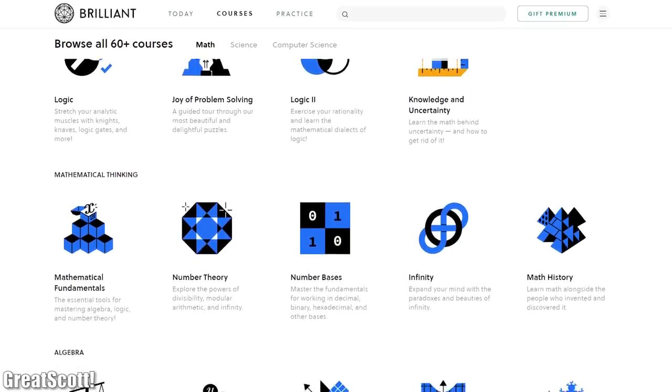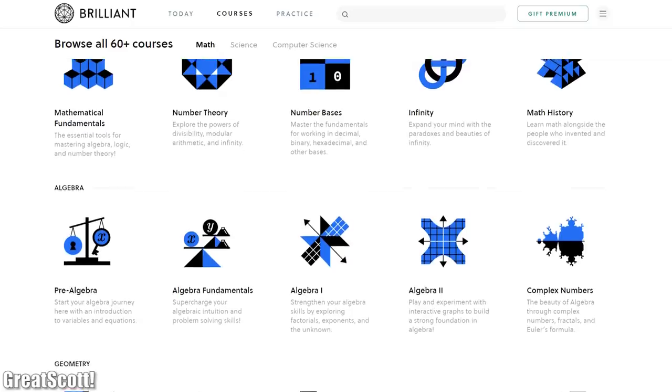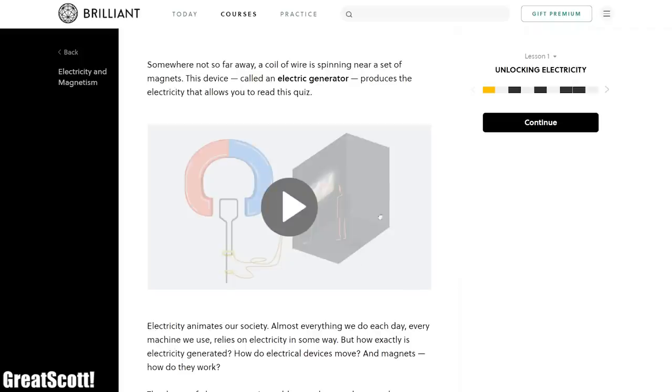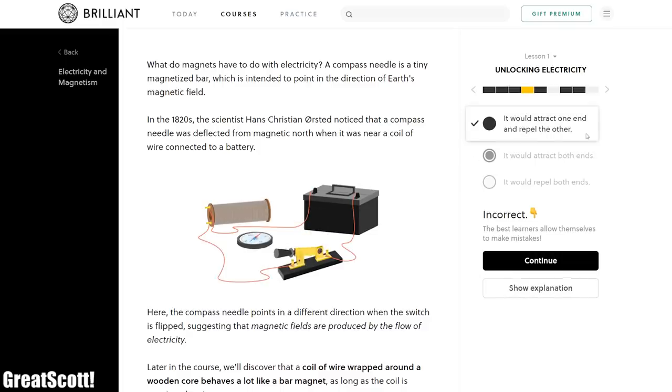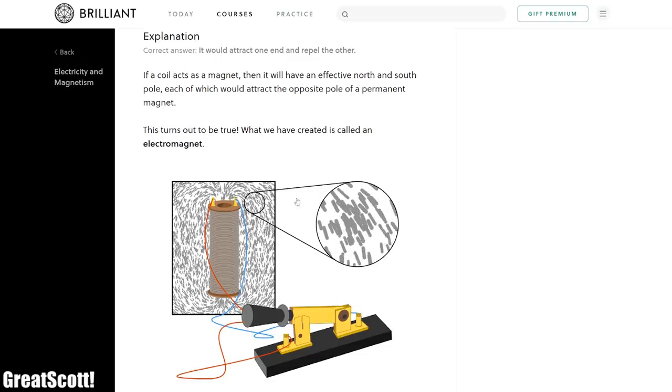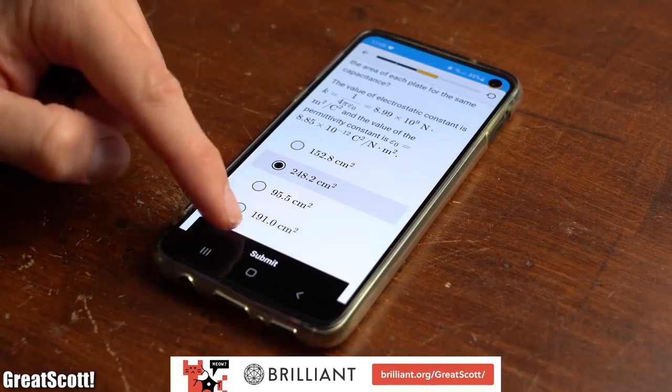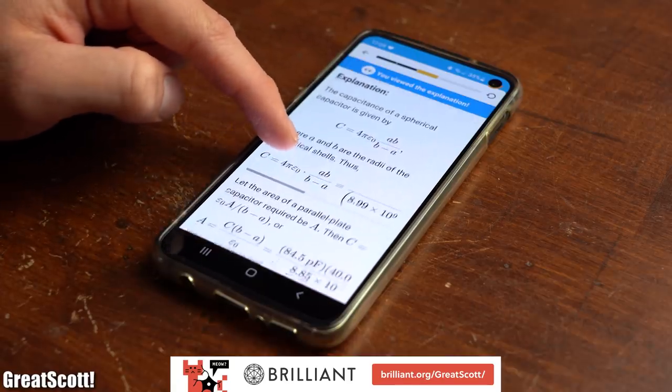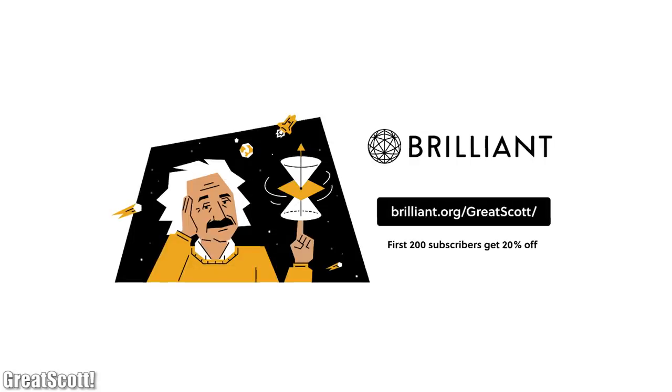This video is sponsored by Brilliant, which is a website and app that I would describe as an interactive storyteller where you can learn all about math, science and computer science. Now since my videos require knowledge about electricity, I had a closer look at the electricity and magnetism course and I was pleasantly surprised that while this course was still easy to understand, there were lots of important details and interactive puzzles that kept everything very interesting and engaging. So if you want to try out Brilliant for yourself then go to brilliant.org/greatscott and sign up for free, and the first 200 people that sign up for an annual subscription through this link will also get a 20% discount.